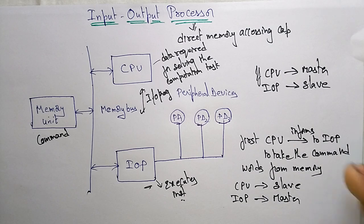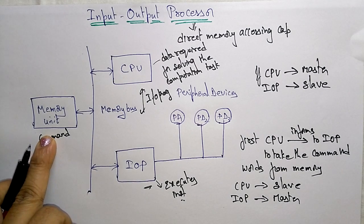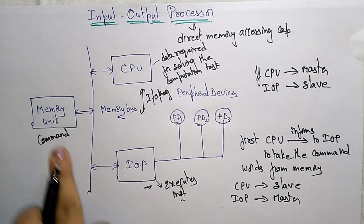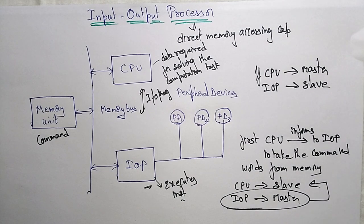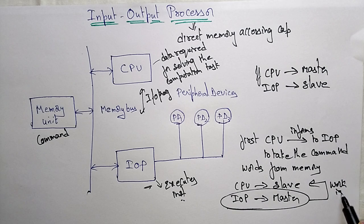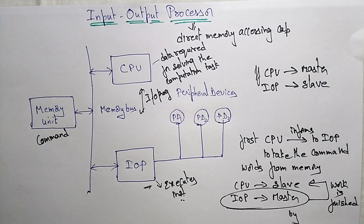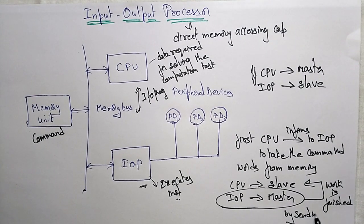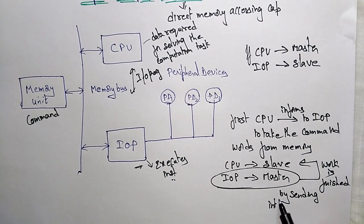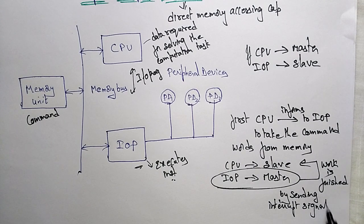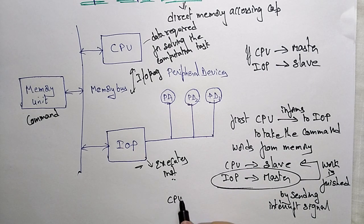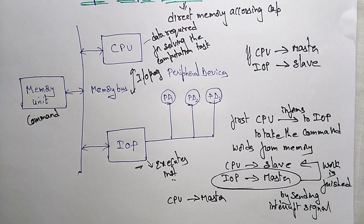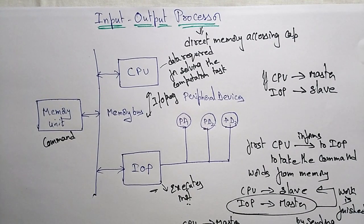Whenever the CPU issues command signals to the IOP to take the command words from the memory unit, the IOP takes those words from memory and executes the instructions. Whenever this operation is over, the IOP sends a signal back to the CPU — an interrupt signal — to indicate that the work is finished. When the interrupt is received, the CPU becomes the master again. This is similar to how Direct Memory Access (DMA) works.